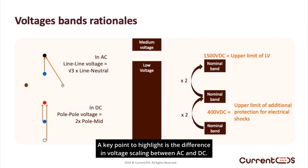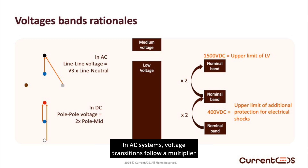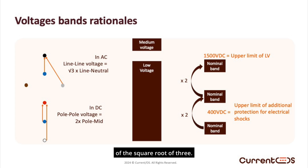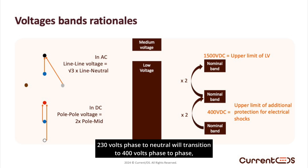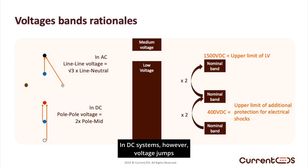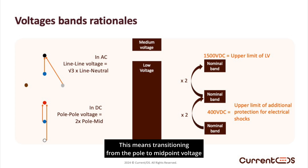A key point to highlight is the difference in voltage scaling between AC and DC. In AC systems, voltage transitions follow a multiplier of the square root of 3. For example, 230 volts phase-to-neutral will transition to 400 volts phase-to-phase, and 400 volts will transition to 690 volts in certain applications. In DC systems, however, voltage jumps are based on a factor of 2, meaning transitioning from pole-to-midpoint voltage to pole-to-pole voltage is achieved by doubling the value.